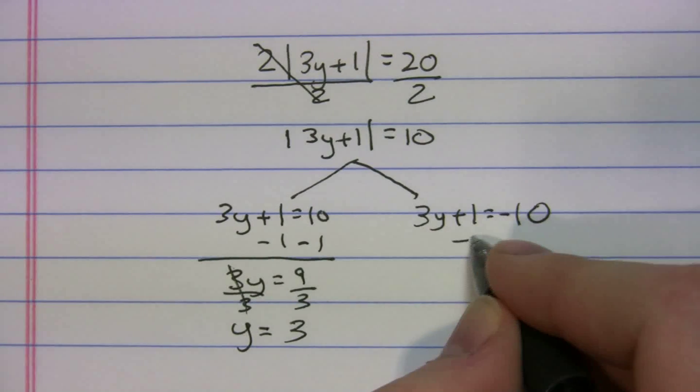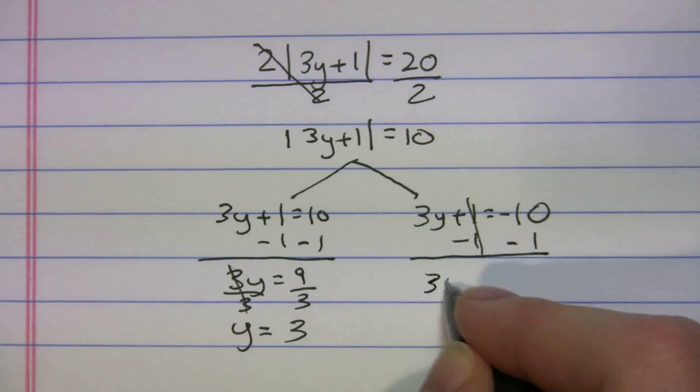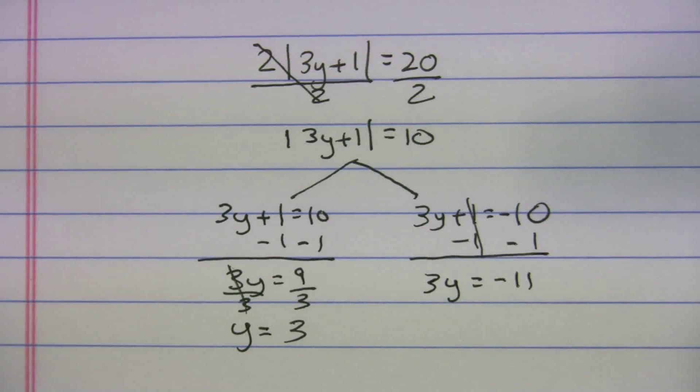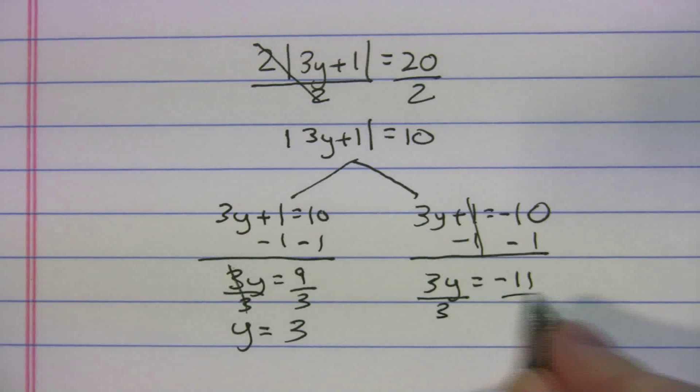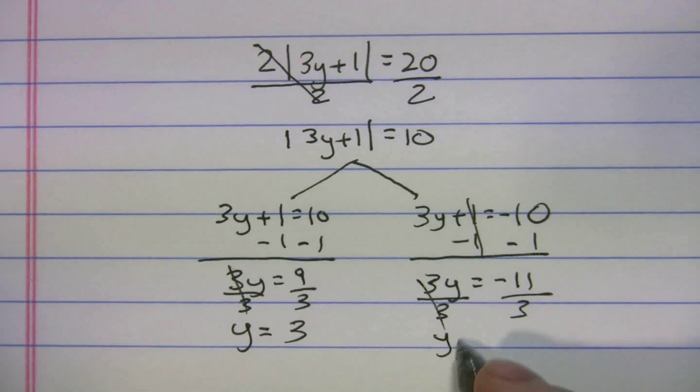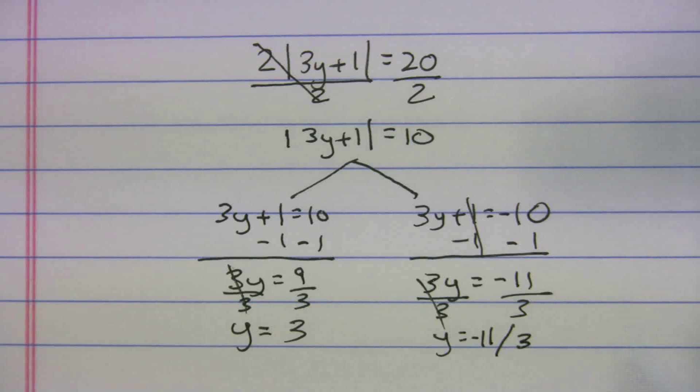Let's do the other one. Minus 1, minus 1. 3y equals -11. Divide by 3. y equals -11/3.